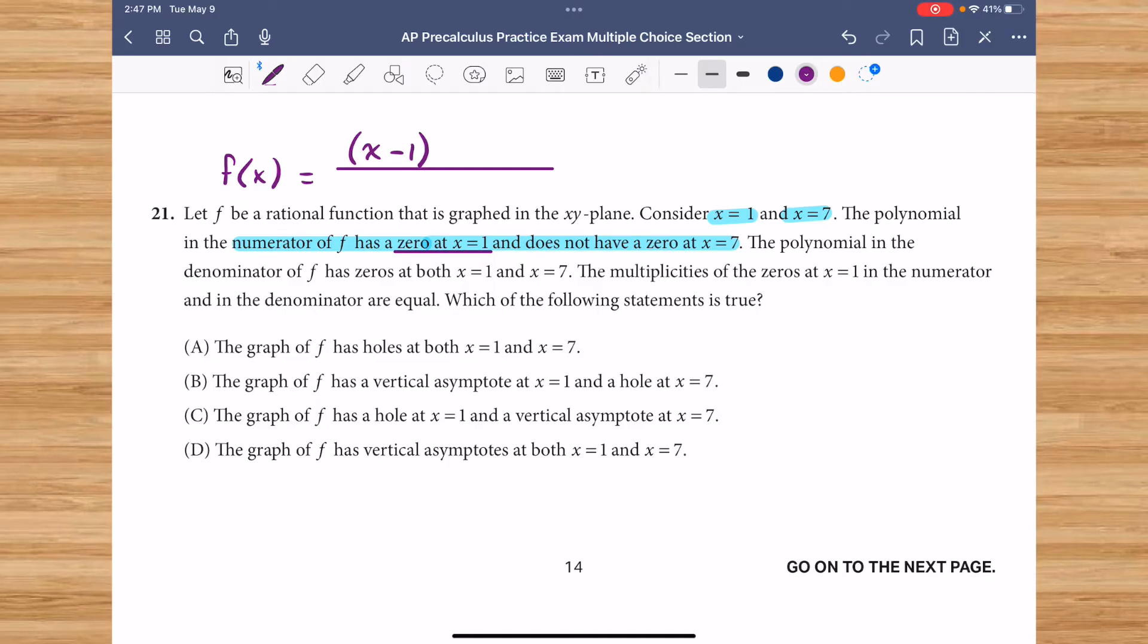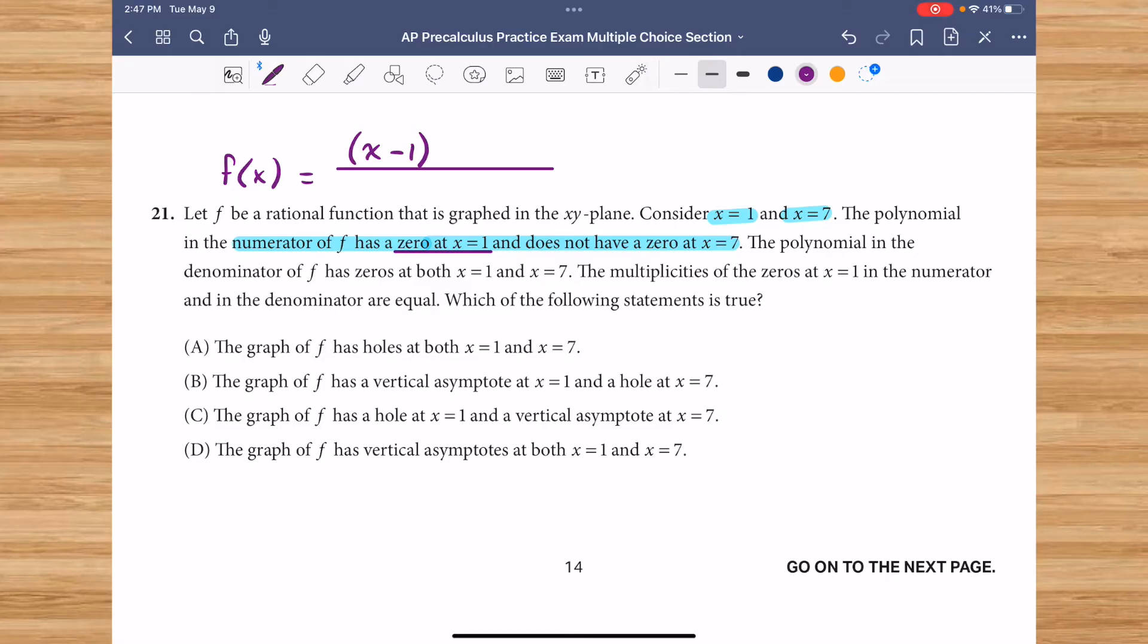It does not have a 0 at x equals 7. That means it cannot have a factor of x minus 7 in the numerator.